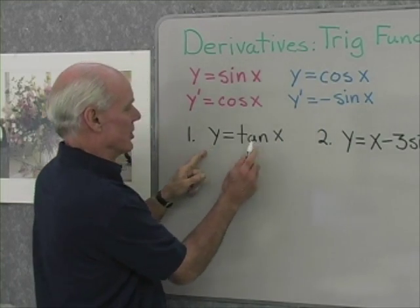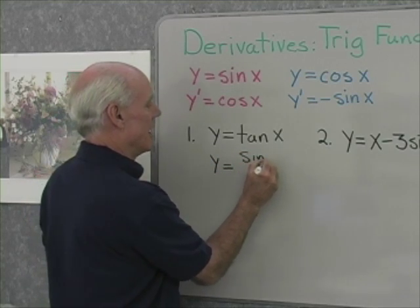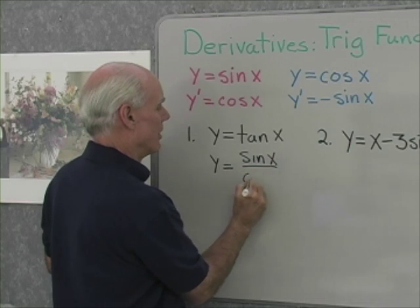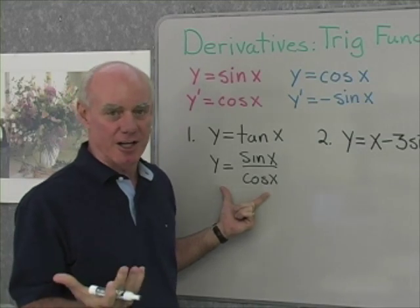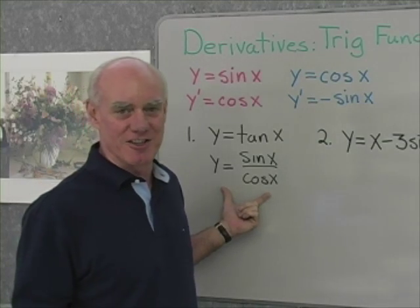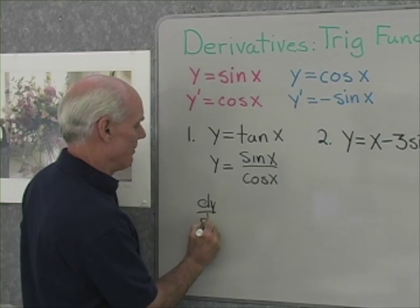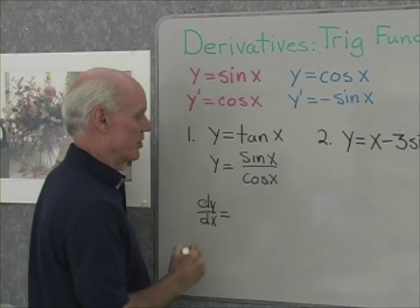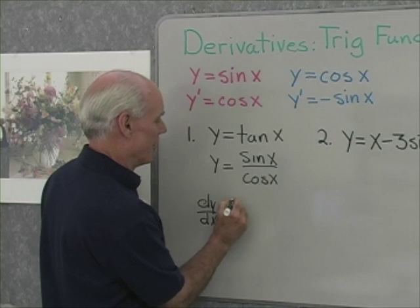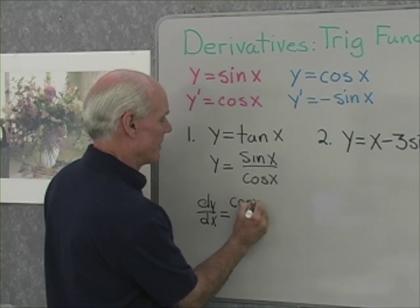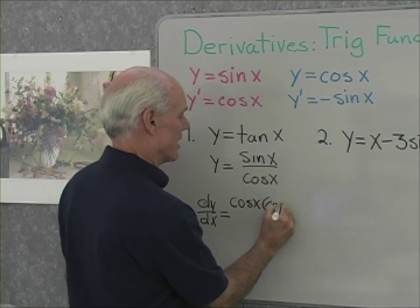For instance, y equals tangent x means that y equals sine x over cosine x. So if I want to differentiate tangent, I can just differentiate this quotient. dy/dx, the derivative of y with respect to x, I have to use the quotient rule. I'll take the denominator, cosine x, times the derivative of the numerator, which is cosine x.